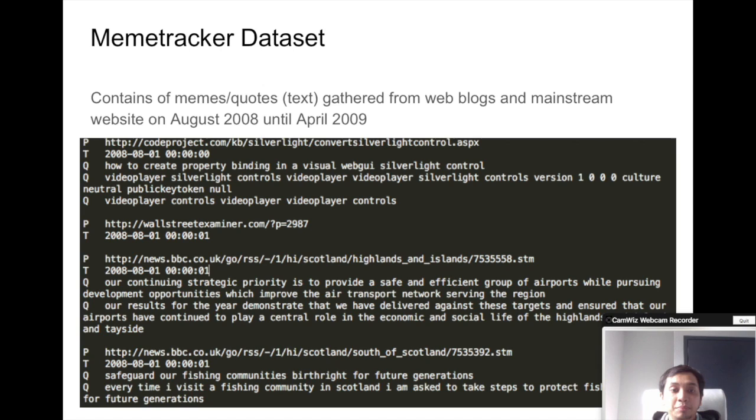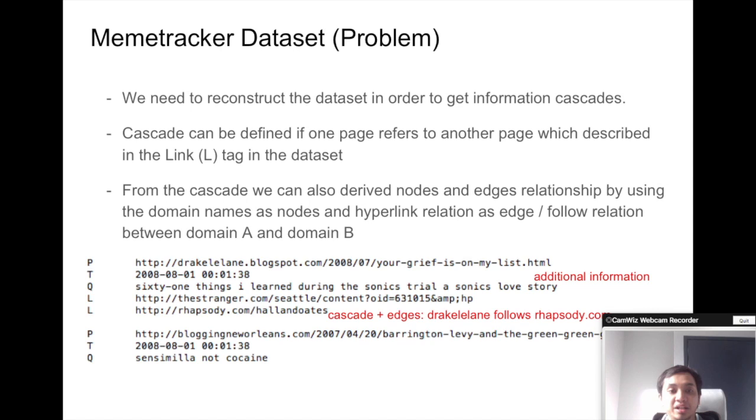We want to observe a meme tracker dataset which is some memes or quotes datasets gathered from web blogs. For this example, dragland.blogspot.com has a relationship or follows rhapsody.com because it has a hyperlink relation given this tag.